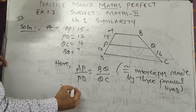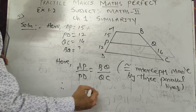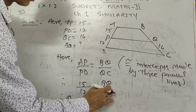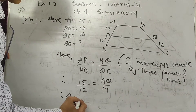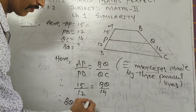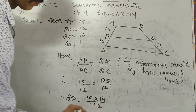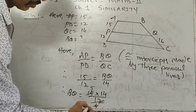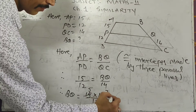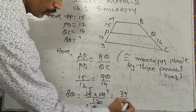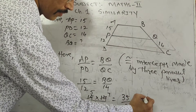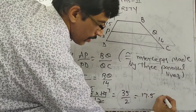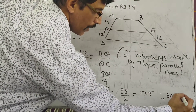Putting in the values: AP is 15, PD is 12, QC is 14, and BQ is unknown. BQ equals 15 into 14 upon 12. Simplifying: 15/12 reduces, and 7 × 5 = 35, giving 35 upon 2. Therefore BQ is equal to 17.5.